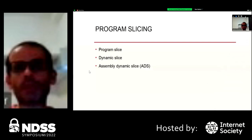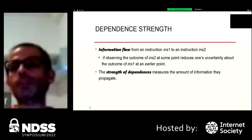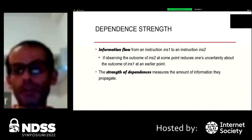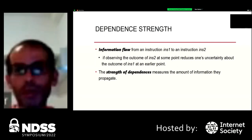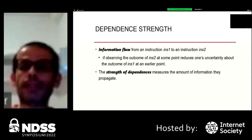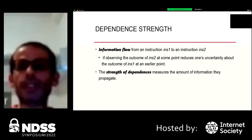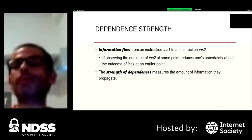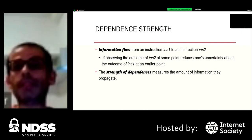Information flow occurs from one instruction to another during execution of a program. If observing the outcome of instruction 2 at some point reduces one's uncertainty about the outcome of instruction 1 at an earlier point, this indicates that instruction 2 is probabilistically dependent on instruction 1. The strength of dependency measures the amount of information they propagate.